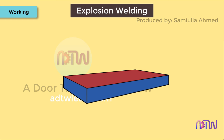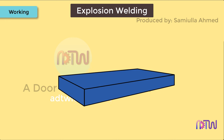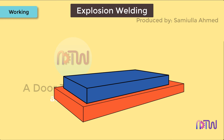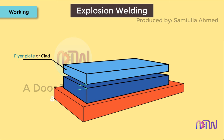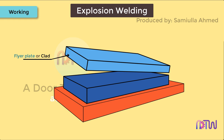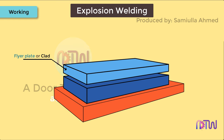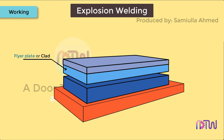Working: first, the surfaces to be welded are cleaned and prepared — no rust or deformation should remain on the surface to produce a good weld quality. The base plate is then supported on the anvil to withstand the explosion and prevent distortion. Then the flyer plate is placed on the surface of the base plate maintaining a standoff distance, and can be held at an angle or parallel to the base plate depending on the weld configuration. The buffer plate is placed over the flyer plate to protect it from damage.